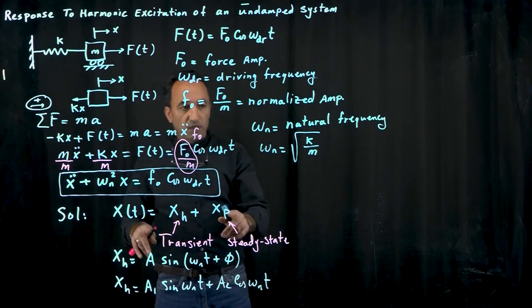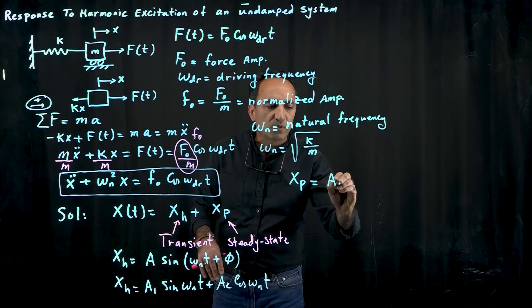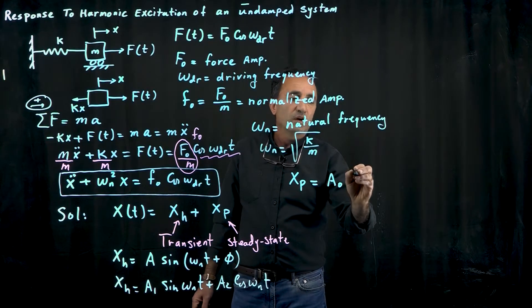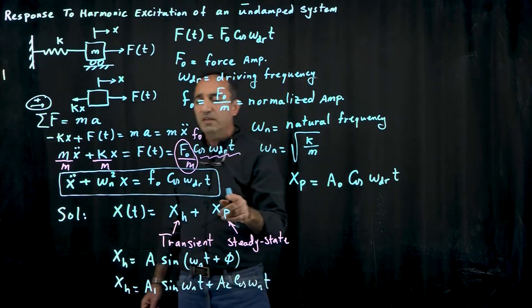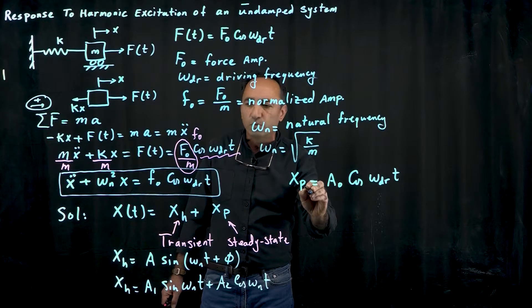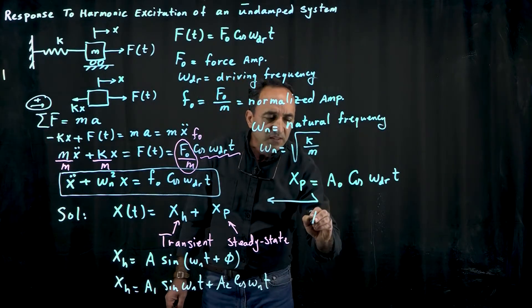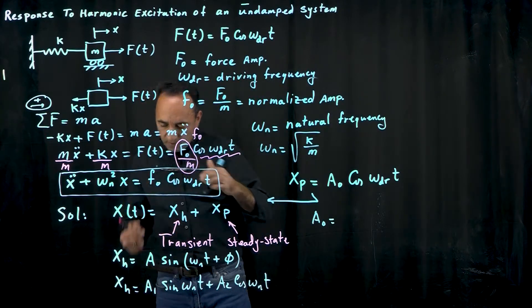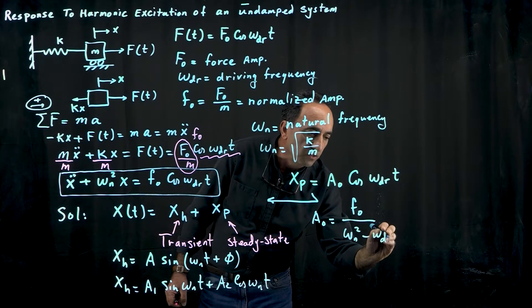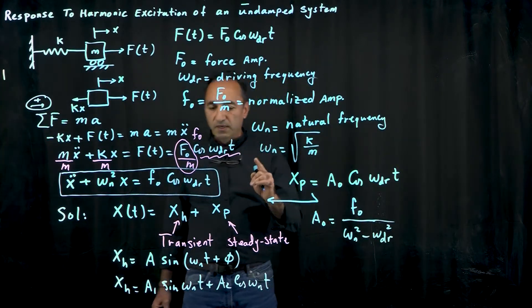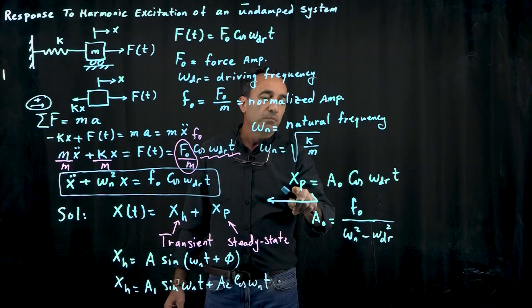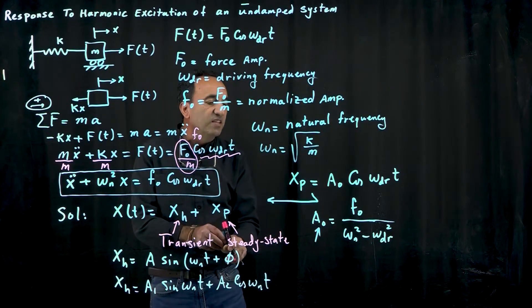Next we look at the particular solution. Particular solution, you assume a solution exactly like your input here. So you say I have some constant A0 times cosine omega_dr t. As we try to plug this back into our differential equation we can easily solve for A0. A0 comes out to be F0, the normalized amplitude, divided by omega_n squared minus omega_dr squared. Remember omega_n is the natural frequency and omega_dr is the input or driving frequency.